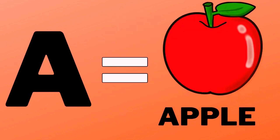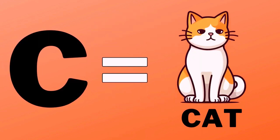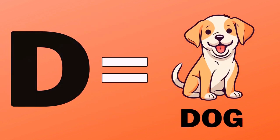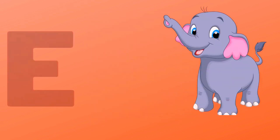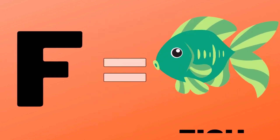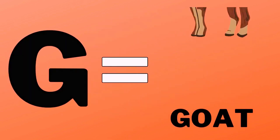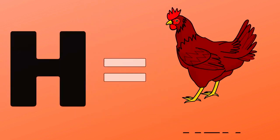A for apple, B for bull, C for cat, D for dog, E for elephant, F for fish, G for goat, H for pen.